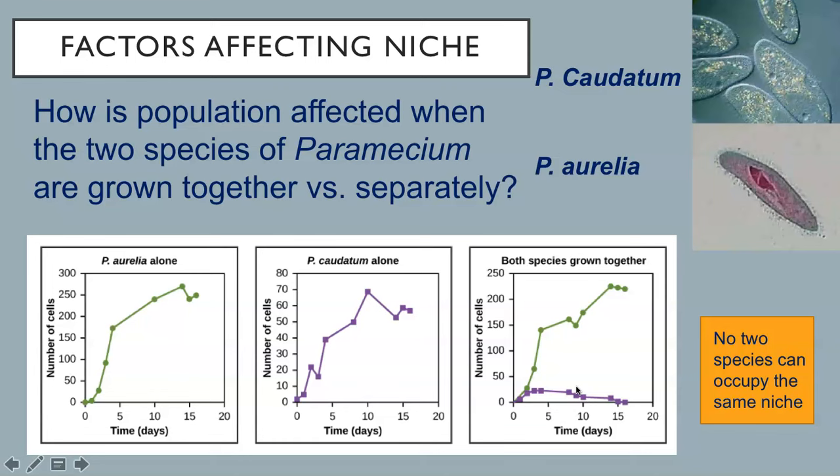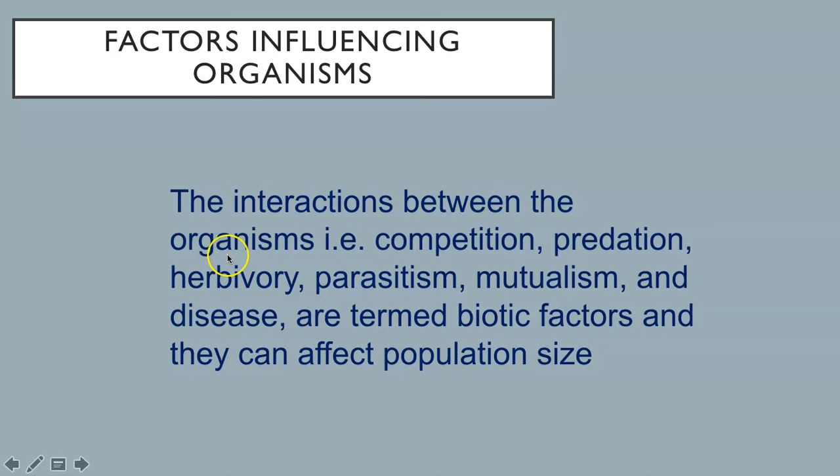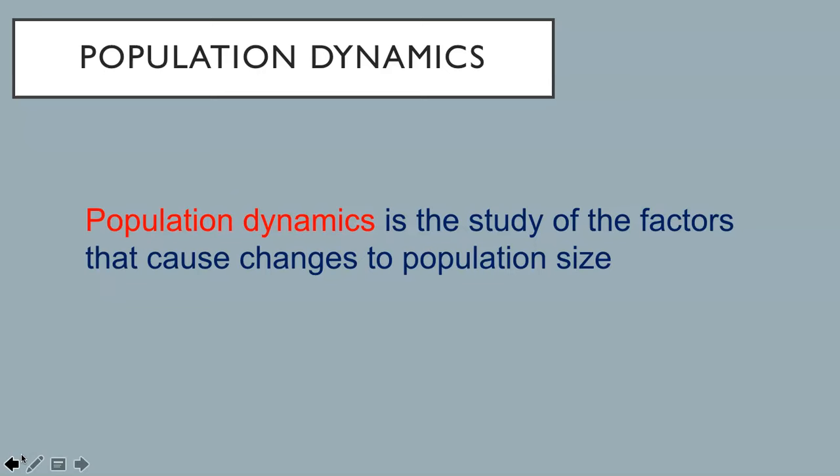This interaction is termed competition. Recall that the interactions between organisms include competition, predation, herbivory, parasitism, mutualism, and disease—these are termed biotic factors—and they can affect population size. Let's discuss each type of interaction now. We are talking about population dynamics, which is the study of the factors that cause changes to population size.